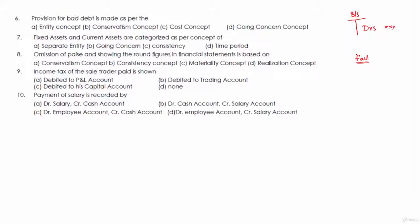Accounting concepts — especially the conservatism concept and prudence concept — say: if you are anticipating a loss, recognize it immediately. Don't wait for that loss to happen. If you are anticipating it, recognize it, and if it does not happen, you can reverse it later. Provision for bad debts is something where you are anticipating a loss and you don't want to account for it only when it happens, because already you know it is likely to happen.